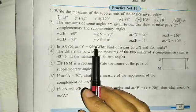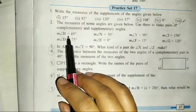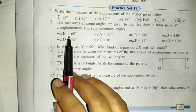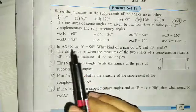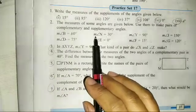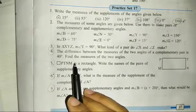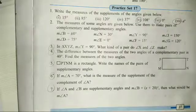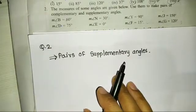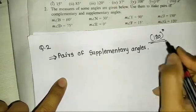We will find out the two angles to make a pair of complementary angles and supplementary angles. First of all, we find out the pair of supplementary angles. Supplementary angles are a pair of two angles that add up to 180 degrees.